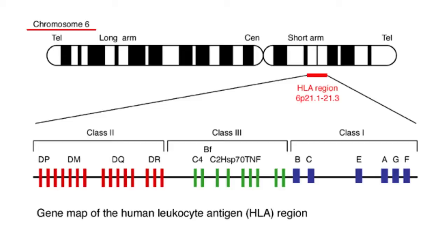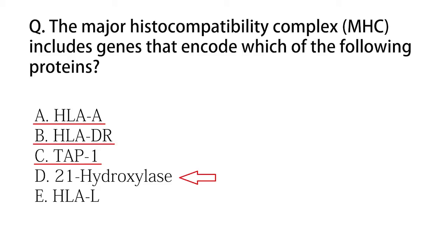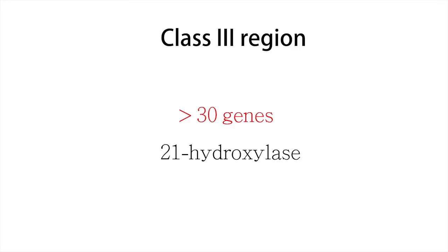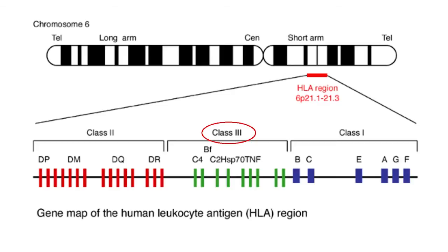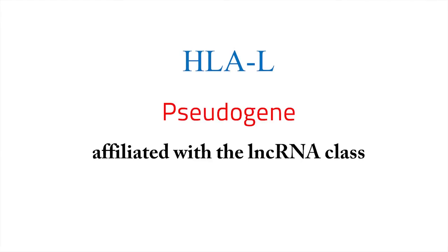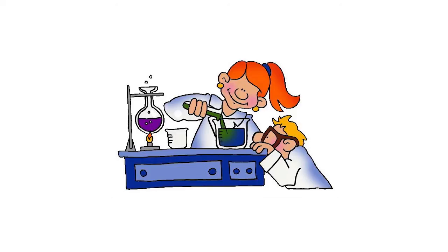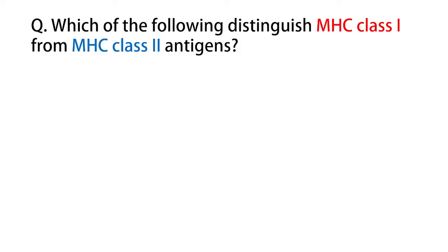Looking at the images, we can find that most of the options given in the question are proteins encoded by the MHC. In option D, the protein 21-hydroxylase is encoded by the MHC class 3 genes, which lie between the class 2 and class 1 regions. The last option, HLAL, is a pseudogene affiliated with the lncRNA class. So the proteins encoded by MHC genes are HLA-A, HLA-DR, TAP1, and 21-hydroxylase — but not HLAL.